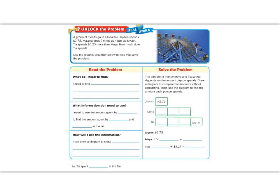Let's go ahead and underline the information that we know. We know that Jason spends $3.75. Maya spends three times as much — three times as much means we're going to multiply. And then it says that Tia spends $5.25 more than Maya, so for Maya we multiply, and then we need to add more after that. Our question is: how much does Tia spend?